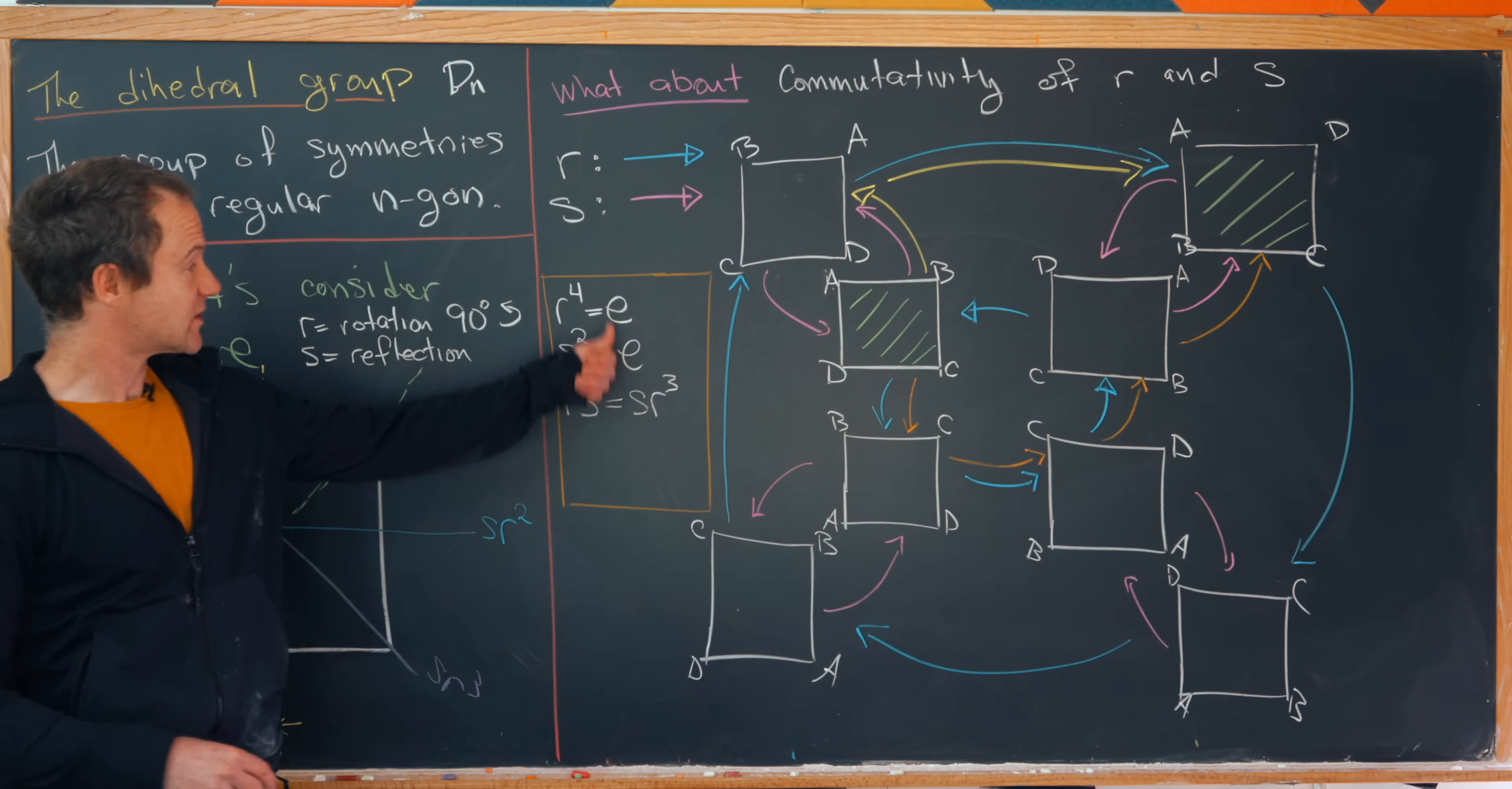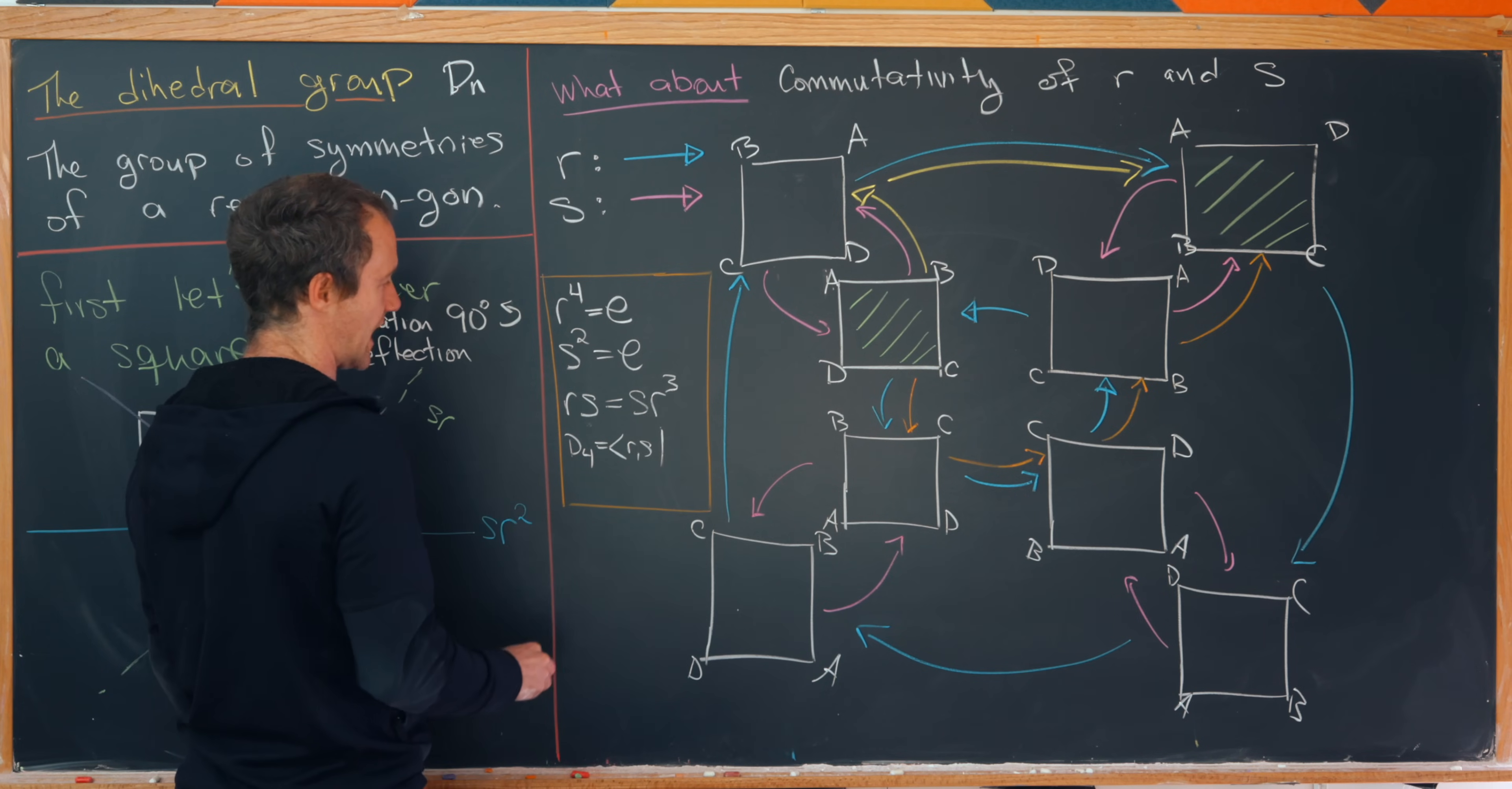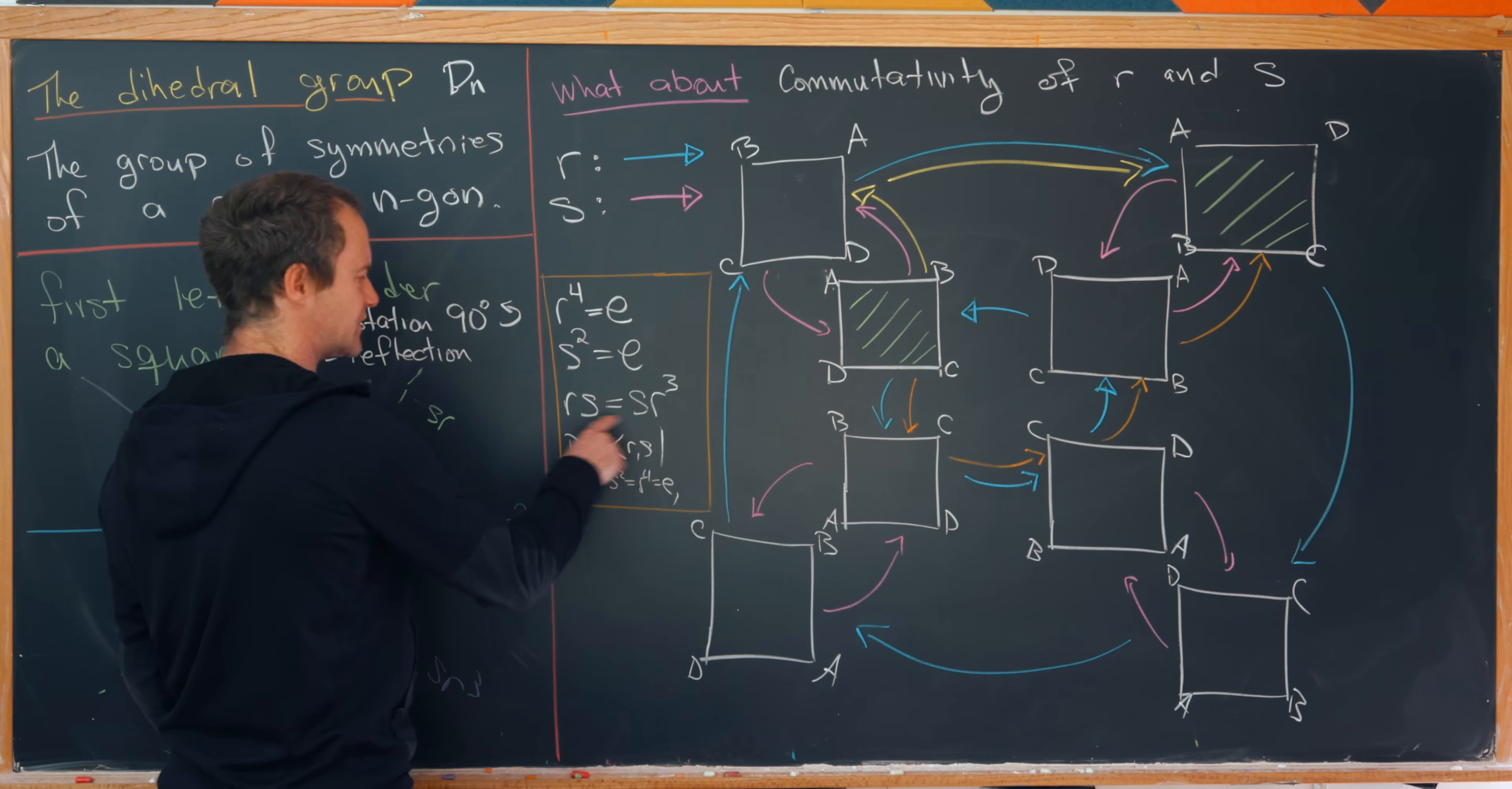And in fact, this is all the data we need to describe this symmetry group of the square. So in other words, we have d four is equal to the group generated by r and s, where we have s squared is equal to r to the fourth is the identity. And then we also have this relation right here, which I don't have room for.